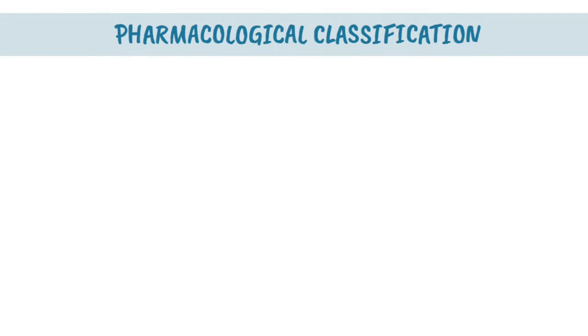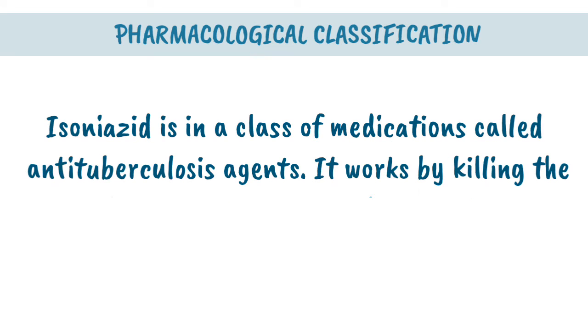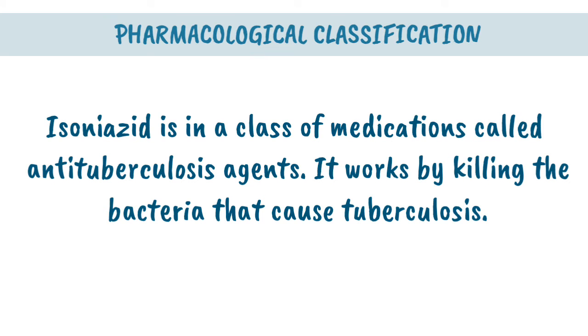Pharmacological Classification: Isoniazid is in a class of medications called antituberculosis agents. It works by killing the bacteria that cause tuberculosis.